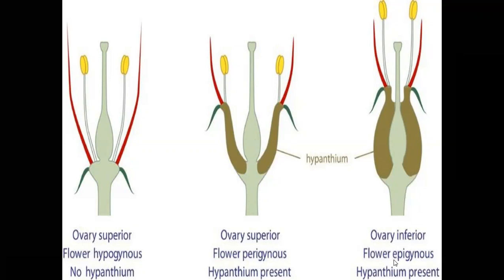The last type is the epigynous flower, which shows an inferior ovary. In epigynous flowers, a hypanthium is present around and above the ovary. Above the ovary, the calyx, corolla, and androecium are developed. This inferior ovary is present in epigynous flowers.